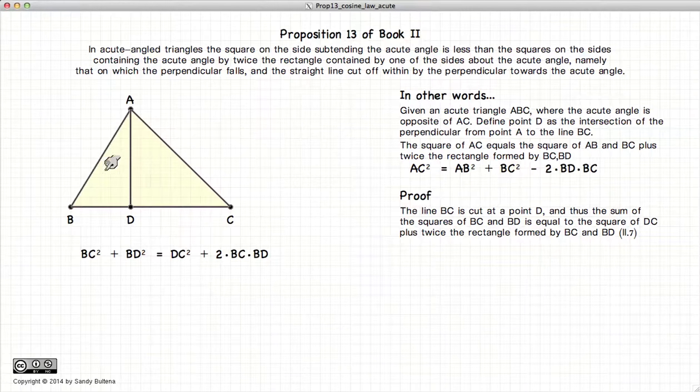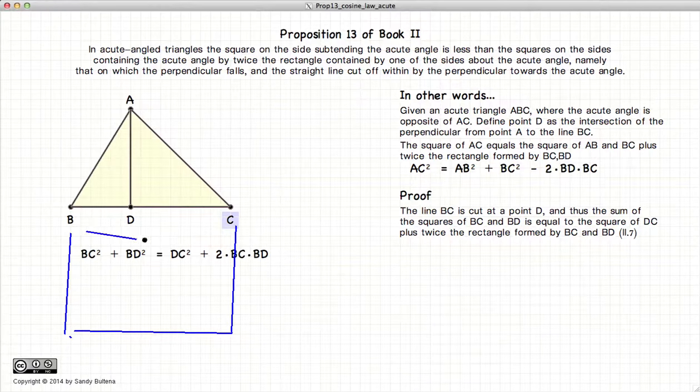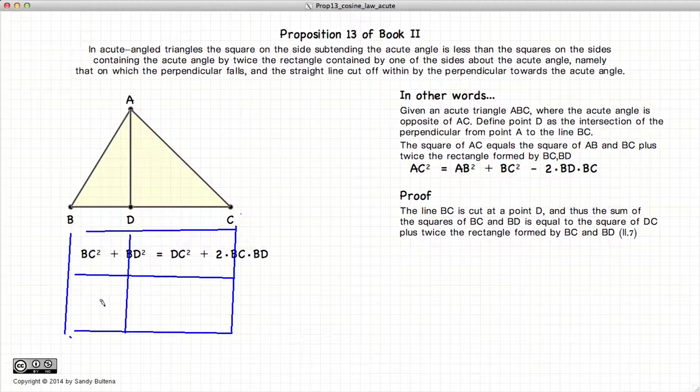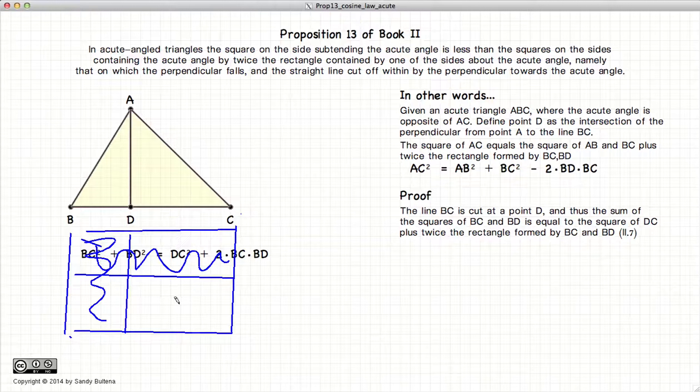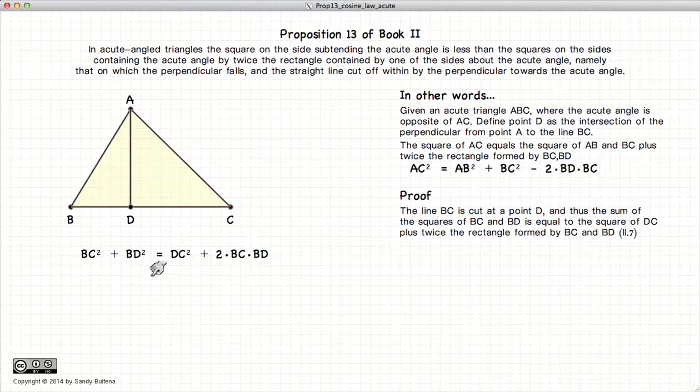So the first thing we need to look at is our line BC, which is cut at the point D. And from Proposition 7, if you recall, we have this equality. And just as a quick little refresher, let's take our BC, make a square. Pretty ugly looking square, but let's pretend. So this is BC squared. So twice of BC times BD would be this area plus this area. You notice that this one is included twice, plus DC squared. So the whole thing is BC squared, and this was used twice, and hence we get this equation. For a better explanation, go back and look at Proposition 7.